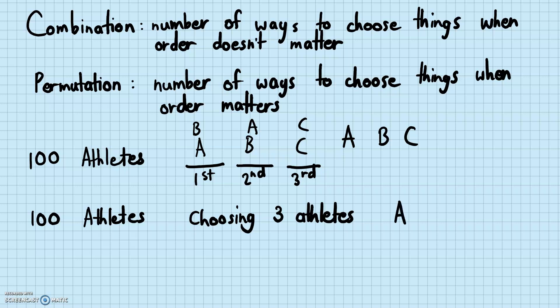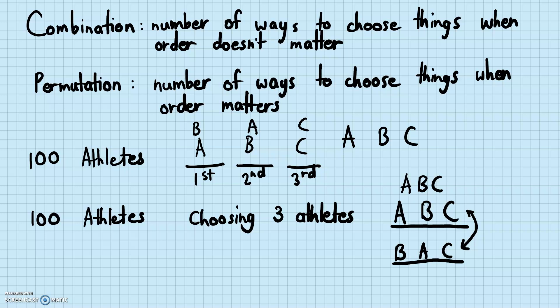So if I choose A, B, and C, choosing those three athletes as A-B-C or B-A-C is basically the same choice. Let's say a country is choosing three of its 100 athletes to participate in the Olympics — then choosing athletes A, B, and C or choosing B, A, and C doesn't really have any difference. The important thing is that you've chosen A, B, and C; it doesn't really matter if you chose A first, or B first, or C first. So this is combination — the order doesn't matter — versus permutation, where the order does matter.